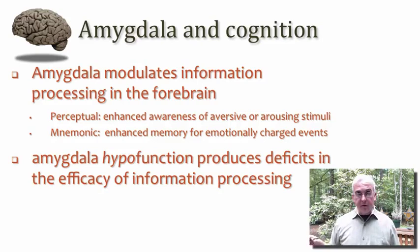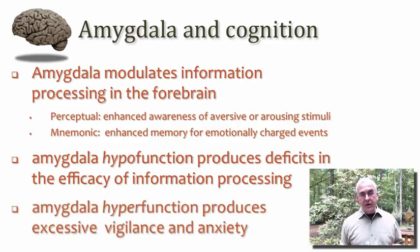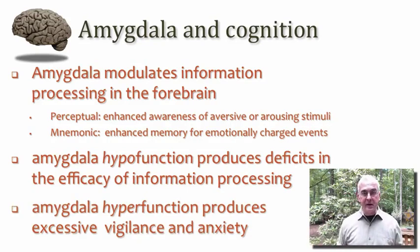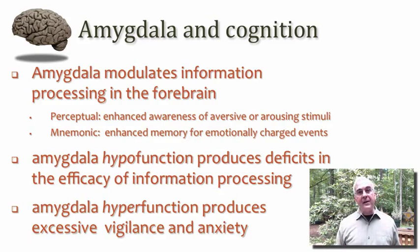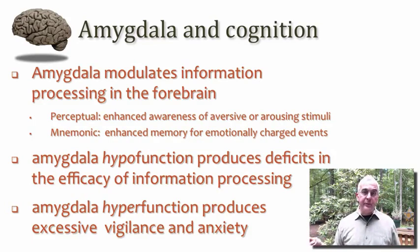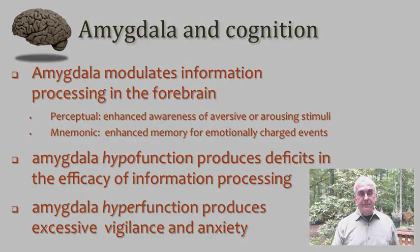There are also problems with amygdala hyperfunction — when there are too many signals coming out of the amygdala. Imagine living with an overactive early warning system. As a consequence, we might expect excessive vigilance, perhaps even anxiety, or perhaps even overt fear.